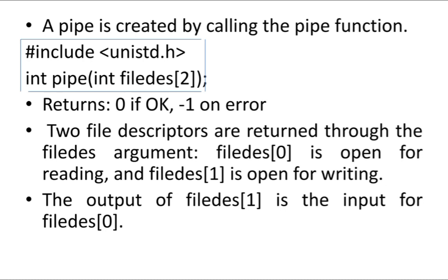Because a pipe is half-duplex, you need one file descriptor for reading and another for writing. fd[0] is used for reading and fd[1] is used for writing. The output of fd[1] is the input for fd[0], since fd[0] is used for reading — the output of write is the input for read.